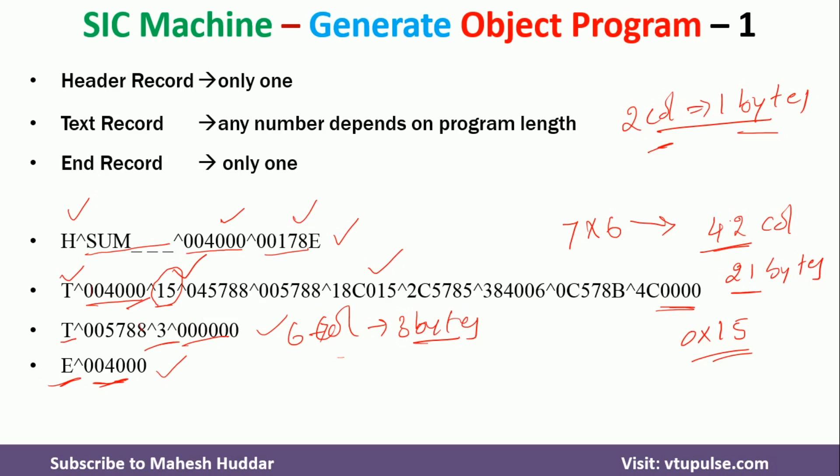In this video, I have discussed how to convert an assembly language program into an object program in a SIC machine. This is solved example number one. The link for other solved examples is given in the description below. If you liked the video, do like and share with your friends. Press the subscribe button for more videos and the bell icon for regular updates. Thank you for watching.